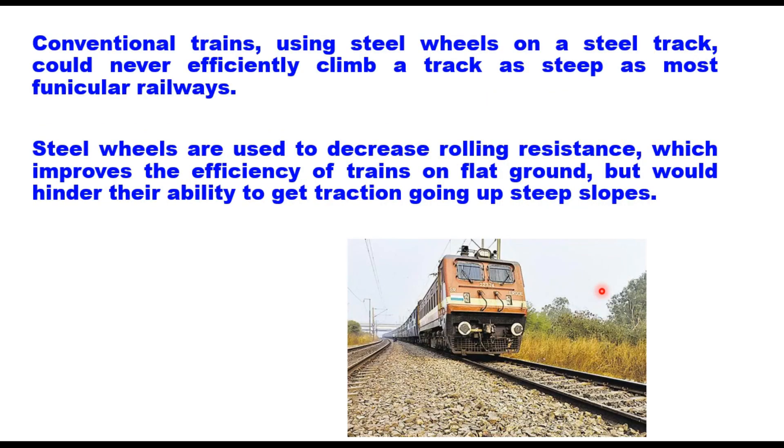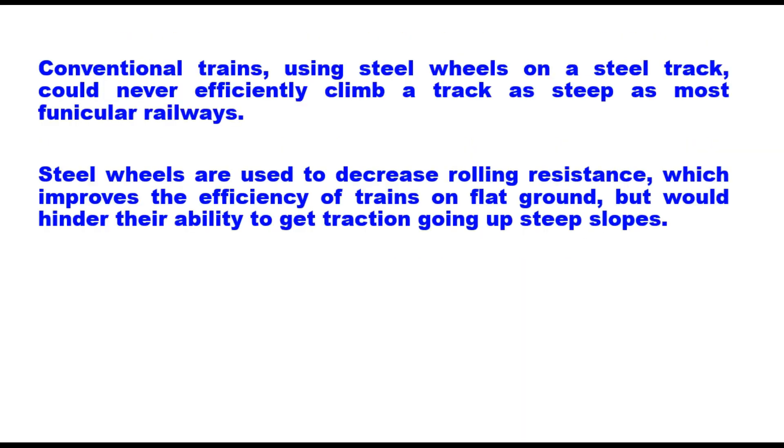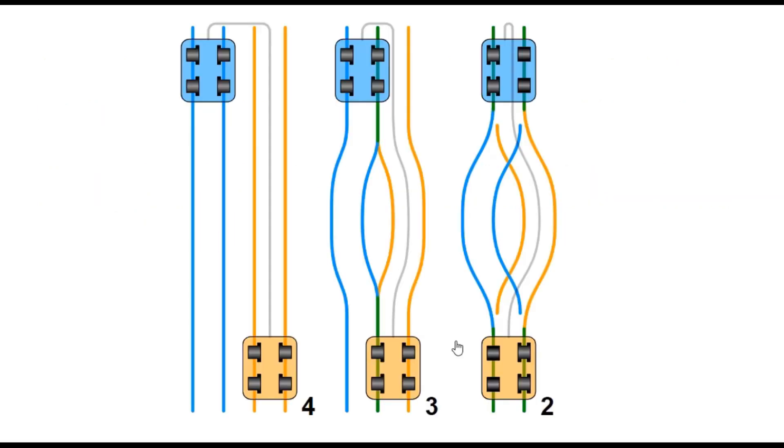You know, conventional trains using steel wheels on a steel track could never efficiently climb a track as steep as most funicular railways. Steel wheels are used to decrease rolling resistance which improves the efficiency of trains on flat ground but would hinder their ability to get traction going up steep slopes. And if you watch my video on gradients in railway, any gradient which is steeper than ruling gradient will require additional engine, and that we call the pusher gradient or helper gradient. Whenever you have slope steeper than ruling gradient, the hauling becomes very difficult and energy intensive. Funicular railways in general solve this problem by pulling trains up steep grades with a cable.